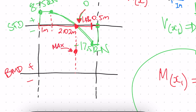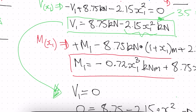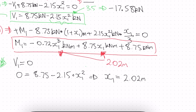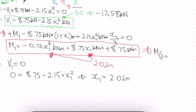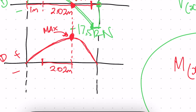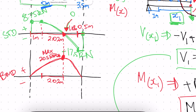At the point of maximum bending moment, the shear diagram will have a curve that peaks and returns to zero. We plug x1 = 2.02 meters into our moment function M1. Evaluating M as a function of 2.02 meters gives 20.5 kilonewton meters. That is the maximum bending moment. To summarize: our maximum shear is 17.5 kilonewtons and our maximum bending moment is 20.5 kilonewton meters.